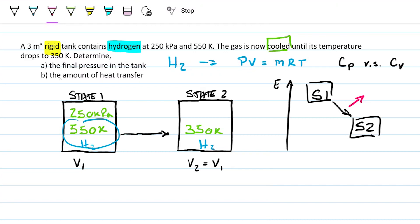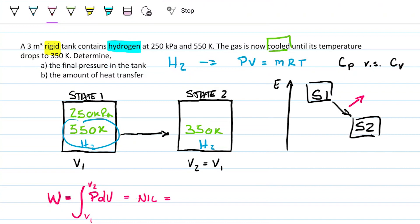Note that there's no change in volume because the tank is rigid, so the work — which is just pressure integrated over volume change — will be zero. Because work is zero, whatever energy is leaving the system has to be heat. That's our key conclusion for this problem.